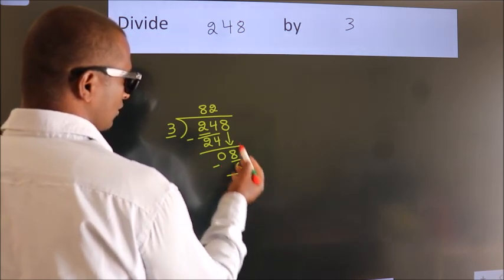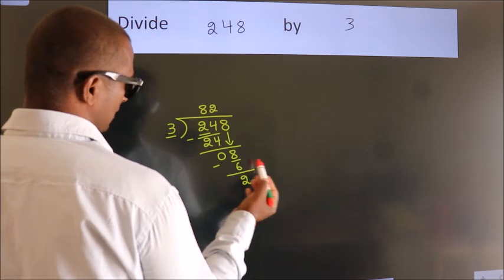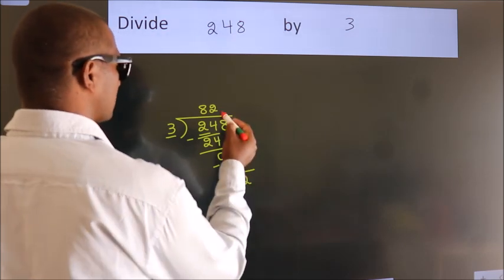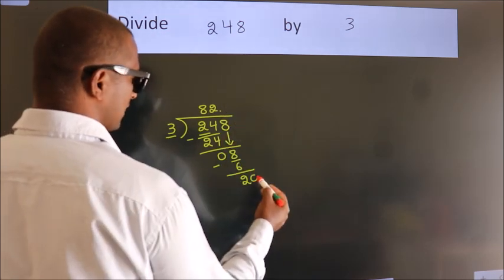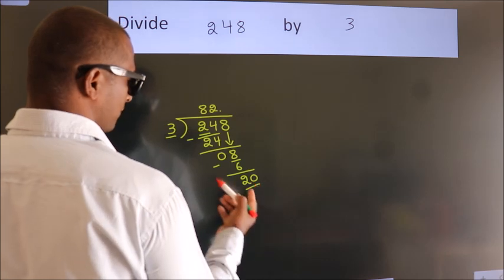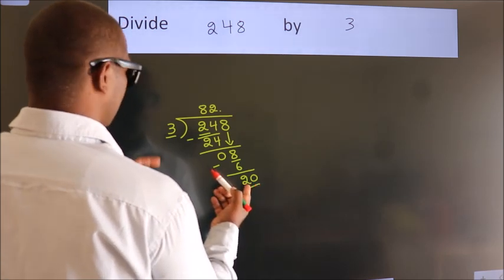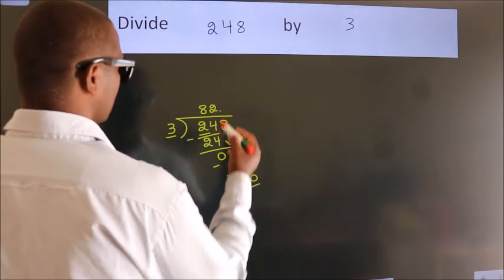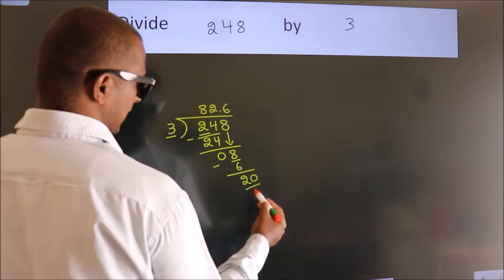After this, no more numbers to bring it down. So what we do is, we put a dot and take 0. So 20. A number close to 20 in the 3 table is 3 times 6, which is 18.